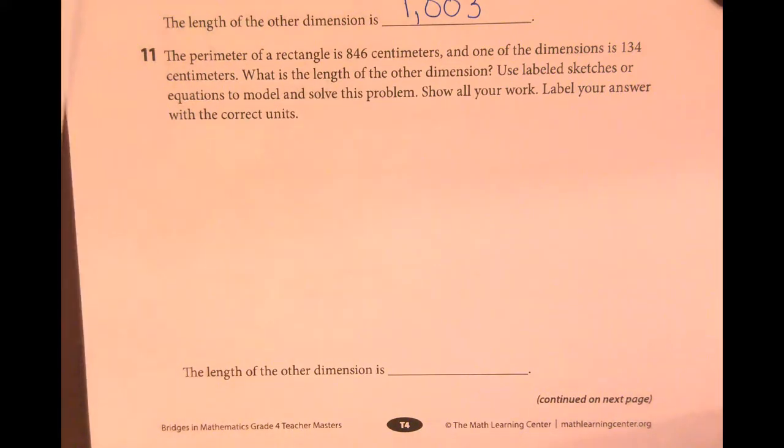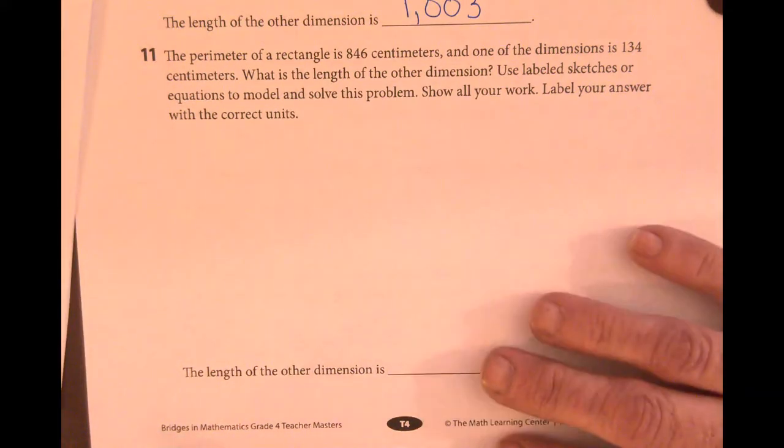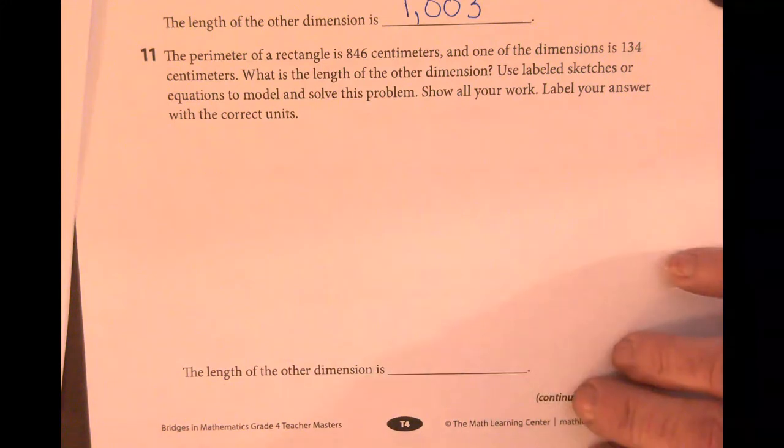Many different ways we can do this problem as well. What I'm going to do is I'm going to subtract the dimension I know times 2 from the perimeter.